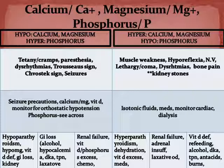When you have too little calcium and magnesium with too much phosphorus (low CM, high P), the signs and symptoms are: tetany, cramps, paresthesia, dysrhythmias, Trousseau sign, Chvostek sign, and seizures. Trousseau sign is when you inflate a blood pressure cuff on the arm and the hand and fingers curl upward. Chvostek sign is when you tap the facial nerve and the face twitches.